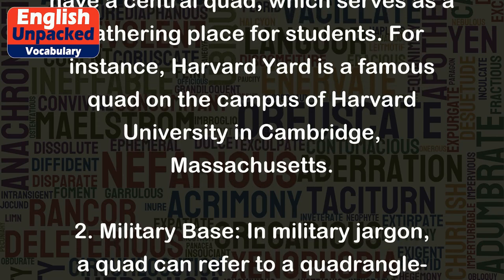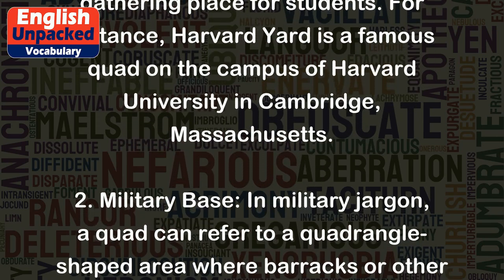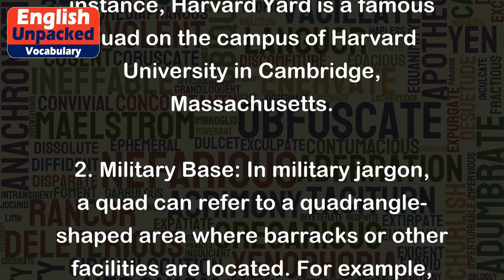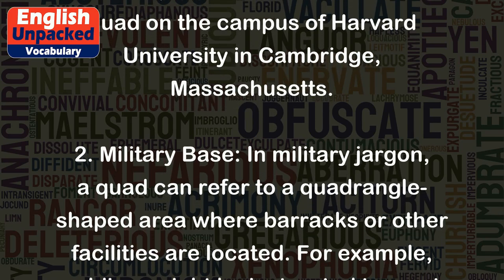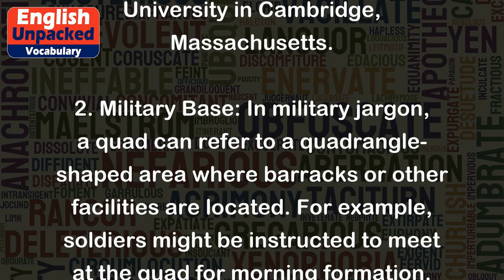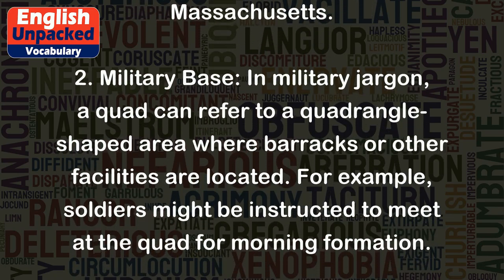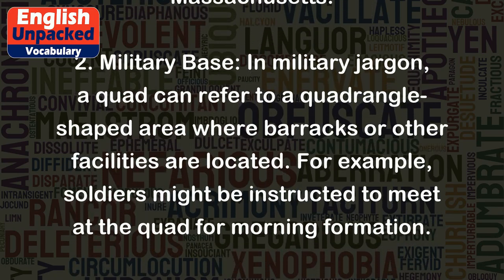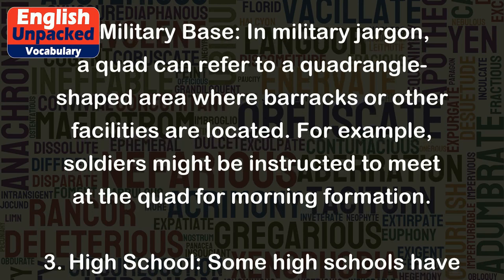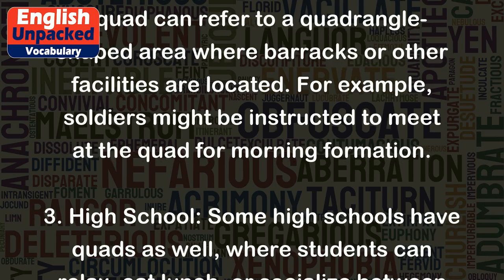2. Military base. In military jargon, a quad can refer to a quadrangle-shaped area where barracks or other facilities are located. For example, soldiers might be instructed to meet at the quad for morning formation.